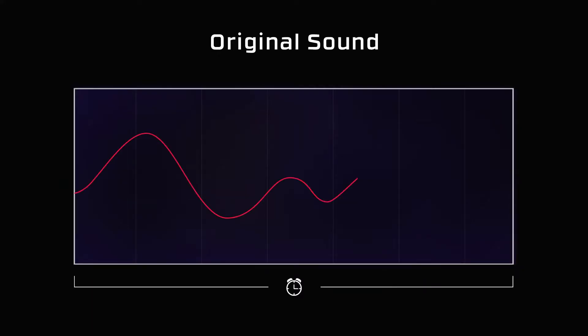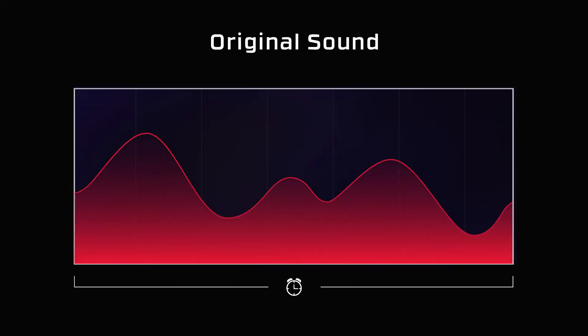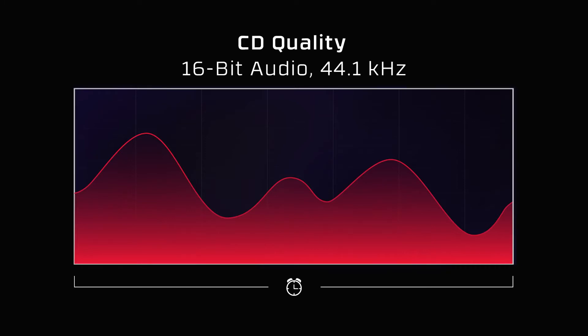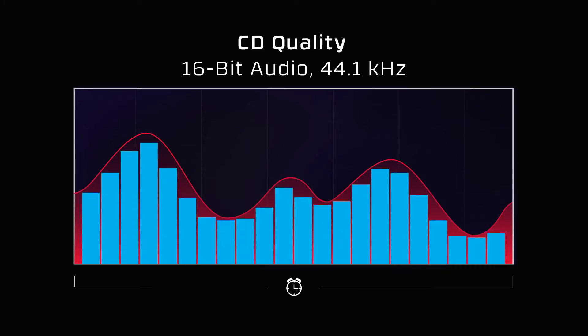Let's take a look at this waveform. Visually, this is how a sound would appear if we heard it raw, uncompressed, and unedited. Here's a representation of how that waveform would be reproduced for CDs at a bit depth of 16 bits and a sample rate of 44.1 kHz. You can see some of the details in the curves gets lost in the samples.